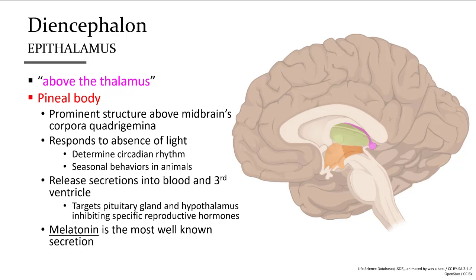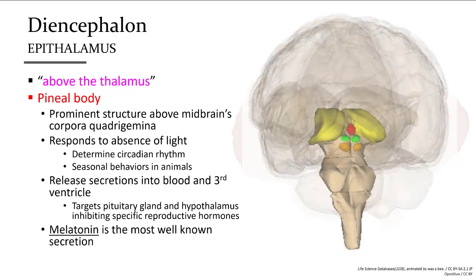The primary secretion from the pineal gland is melatonin. Secretions from the pineal gland go directly to the blood and out to the body, as well as into the third ventricle and the hypothalamus, often inhibiting hormones released by the pituitary gland. In a posterior view, the pineal body is indicated just above the corpora quadrigemina, specifically above the superior colliculi.